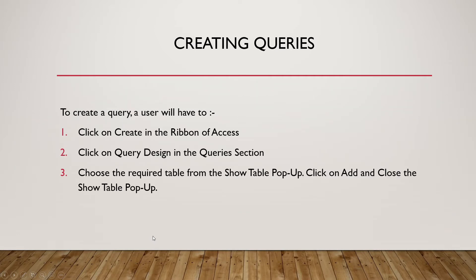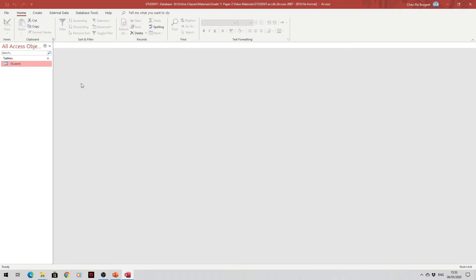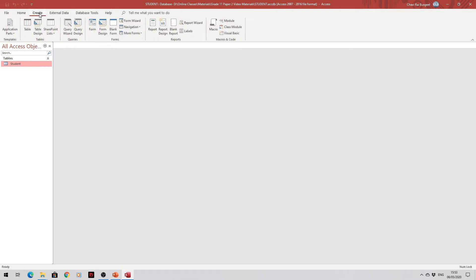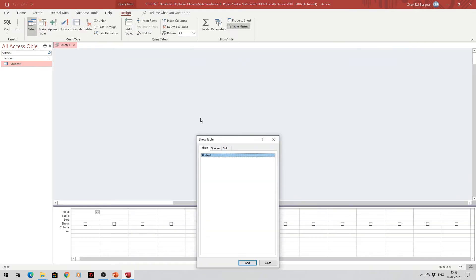To create a query, a user will firstly click on 'Create' in the ribbon of Access, click on 'Query Design' in the queries section, choose the required table from the Show Table popup, then click Add and close the Show Table popup. Here we are in Access in the database student, and we follow these steps: click on Create, click on Query Design, add the student table, and close the Show Table popup.